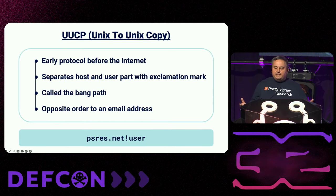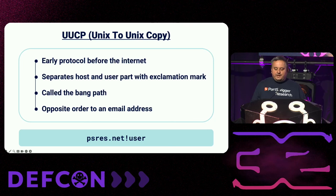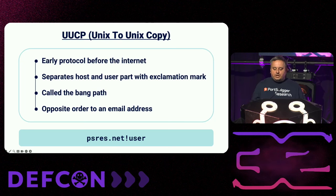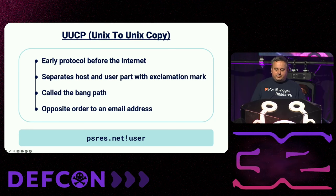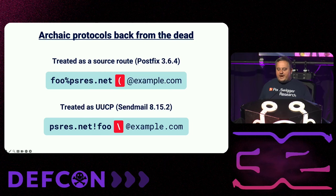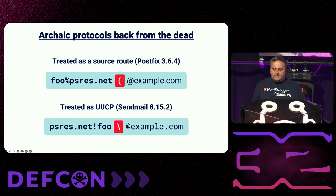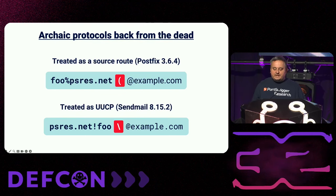Before email addresses existed, and even the internet, people exchanged messages using UUCP — Unix-to-Unix copy protocol. It's an early protocol that separates the local user and multiple hosts using an exclamation mark, creating what is known as the bang path. Unlike the standard format for internet email addresses today, the bang path lists the hosts from left to right, with the destination user mailbox on the right. Going back to the original examples, with all the special characters removed, what the parentheses actually do is remove that at symbol and domain, and without the domain part, Postfix treats that as a percent source route. Using a backslash and escape in the at symbol has the same effect on sendmail, which treats the email as a UUCP address.